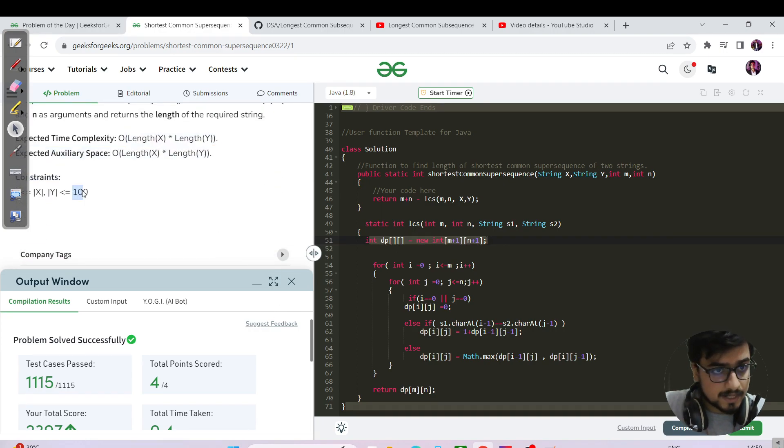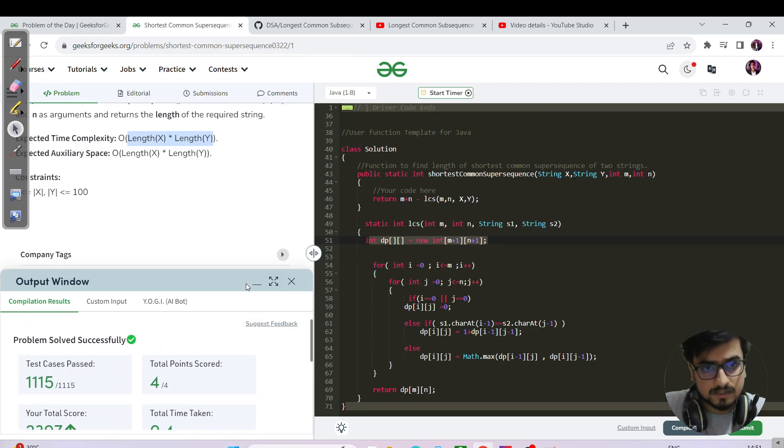Let us do the constraint analysis as well. X and Y both go to length as 100, and we are using length of X into length of Y. So 100 star 100 will give you 10 to the power 4, which is definitely less than 10 to the power 8. And that is why we got our code submitted.